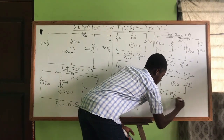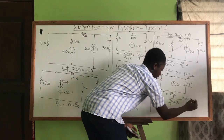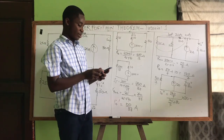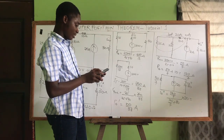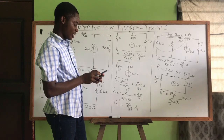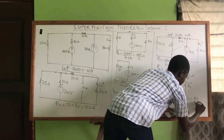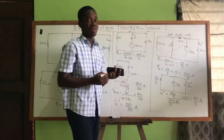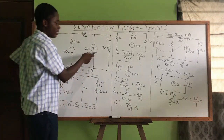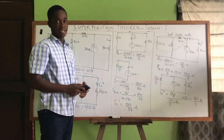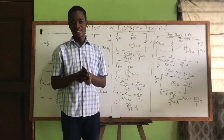Applying the current divider for i₀'' (current through the 30 ohm branch): i₀'' = (120/7) / (120/7 + 30) × 20 = 80/11 amperes. So the current through the 30 ohms due to the 20 ampere source is 80/11 amperes.